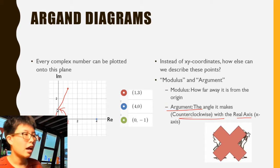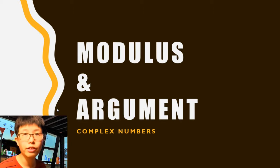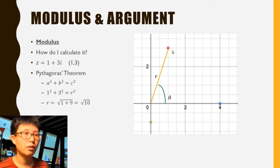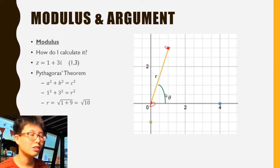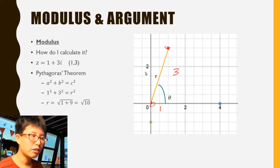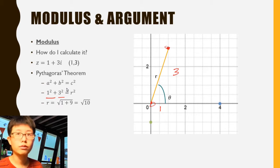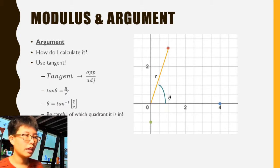So let's talk about how to calculate the modulus and argument. For the modulus, it's the distance from the origin to your point, and you can use Pythagoras' theorem. If your x-coordinate is 1 and your y-coordinate is 3, then a² + b² = c², so r equals the square root of 1² + 3², which gives you the square root of 10.